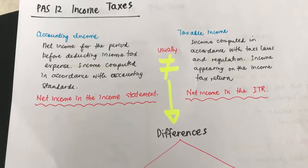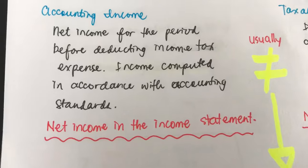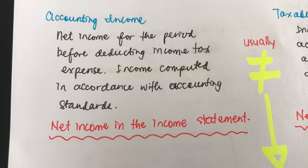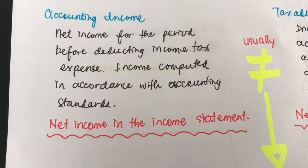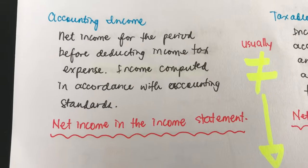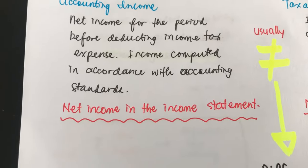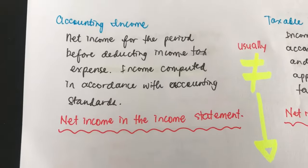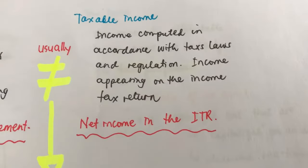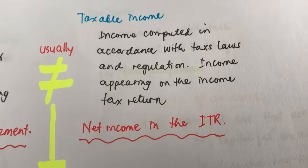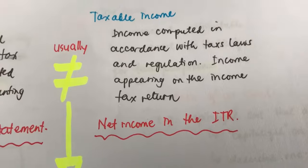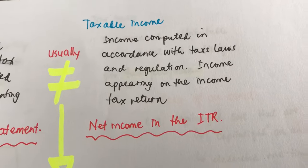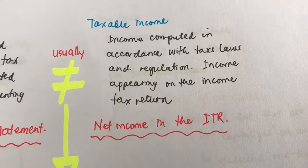Let's first differentiate accounting income from taxable income. Accounting income is the net income for the period before deducting income tax expense — the income computed in accordance with accounting standards, which is the net income presented in the income statement. Taxable income, on the other hand, is the income computed in accordance with tax laws, or the net income reported in the income tax return.